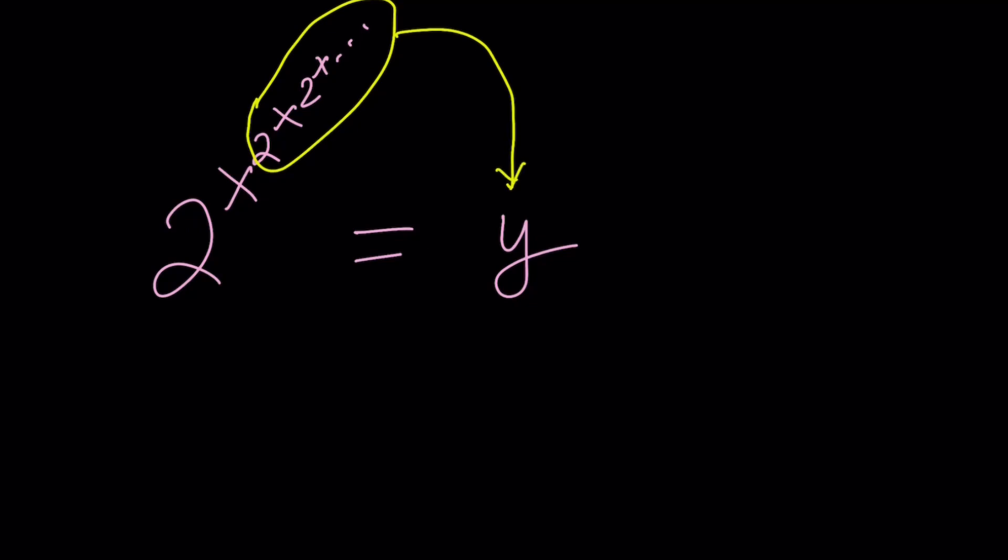So now we get something interesting from here. 2 to the power x to the power y equals y. So here's a million-dollar question: Can you solve for y explicitly? Not implicitly, right? Explicitly. So can you find something like y equals f of x? Can you express it?